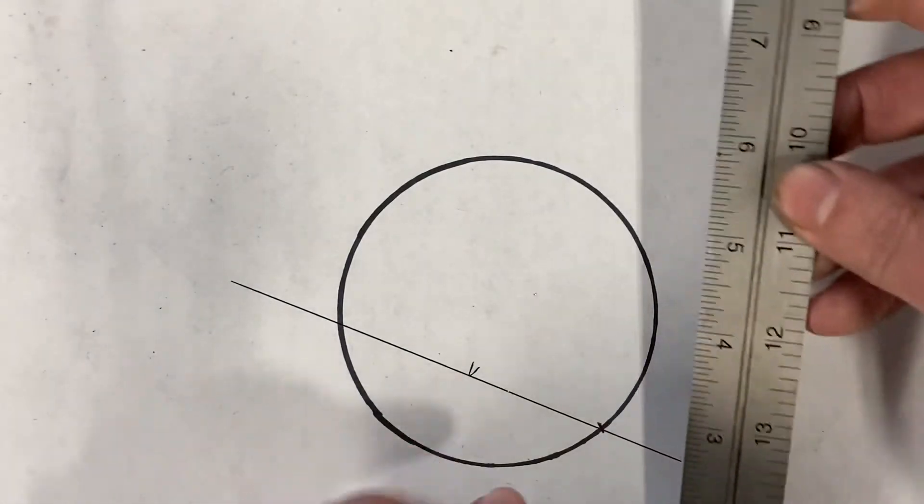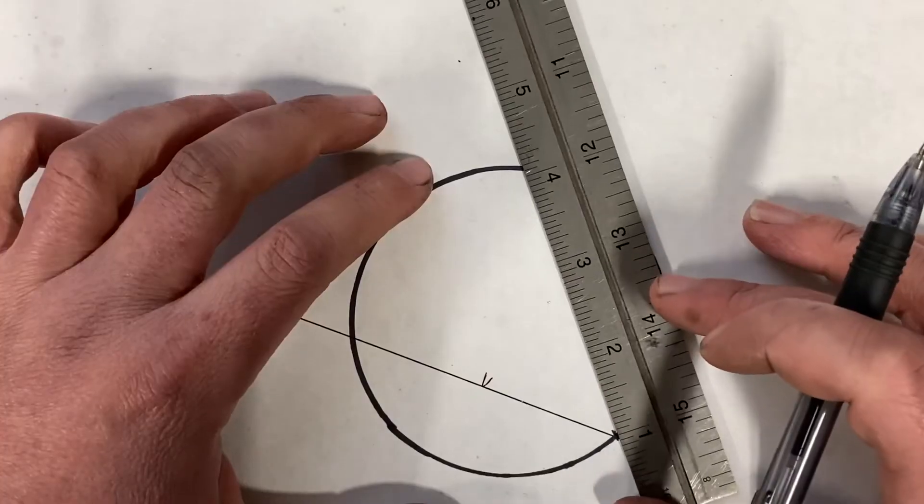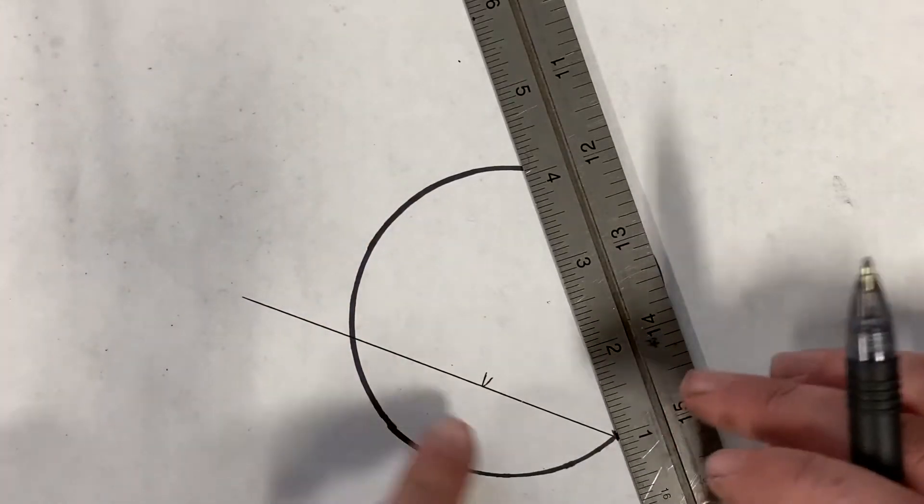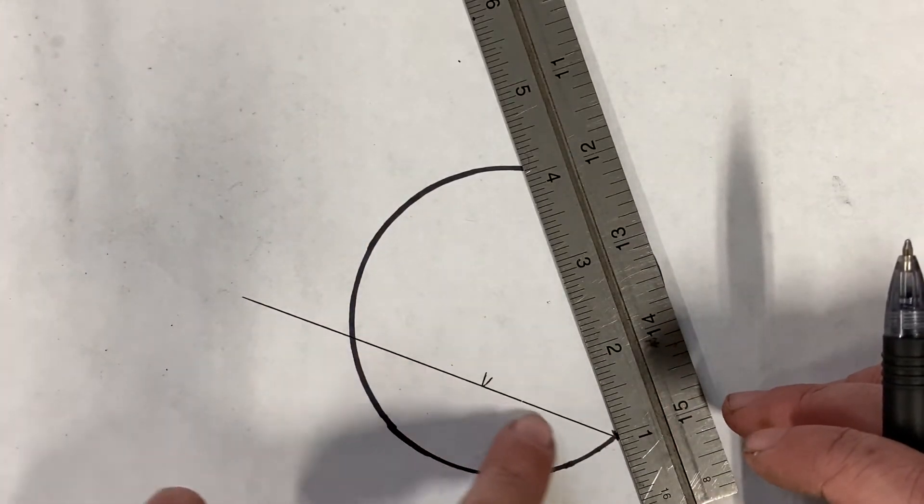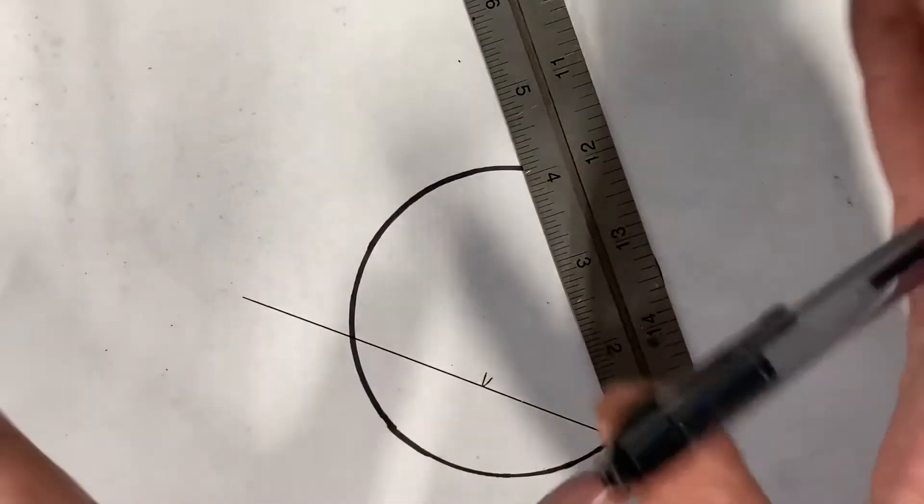Now do the same thing, pivoting on that portion of the circle. You also want to do three inches, the exact same distance from here to here. You want to mirror on the other side of your large V.